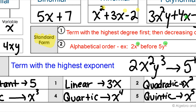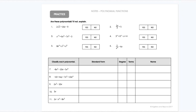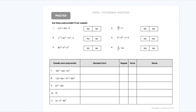We're going to practice looking at what are polynomials and what are not, and then classifying them by their degree and their number of terms — giving them the names we just talked about. Let's start with classifying polynomials. Remember, polynomials have to have whole number exponents: 0, 1, 2, 3, 4. So in this first one, if we look at the variables, we have a square root of x.